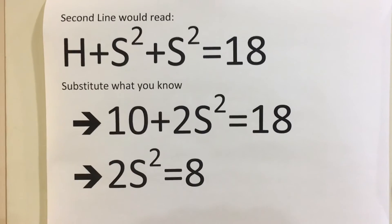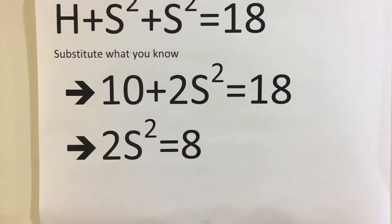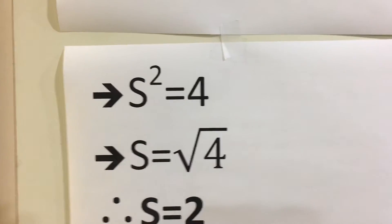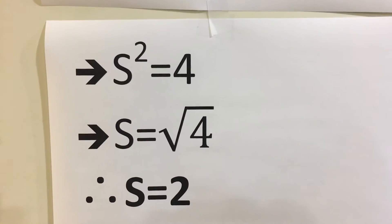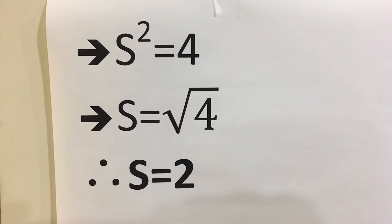H plus S squared plus S squared equals 18. 10 plus 2S squared equals 18. 2S squared equals 8. S squared equals 4, therefore S equals the square root of 4. Therefore S equals 2.